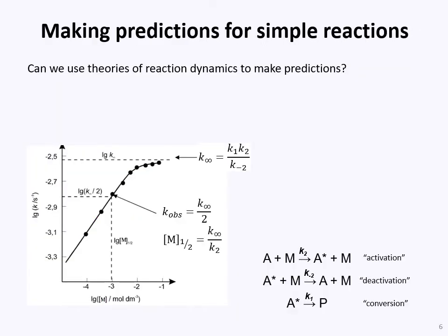Can we use these theories to make any predictions? If we do try to make predictions using the tools we've been developing, how close can we get to reasonably accurate numbers? There's quite a lot of information on this slide. Some of it is already familiar — for example, the high-pressure rate constant k_infinity equals k₁k₂/k₋₂ as we've already discussed.